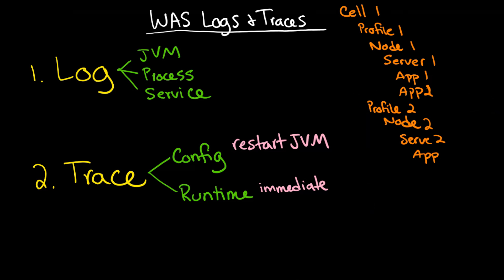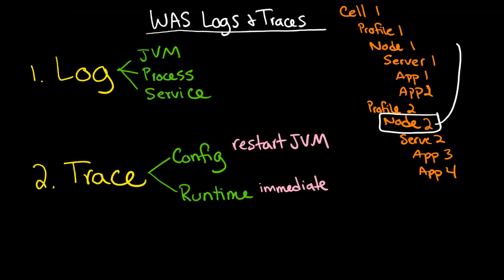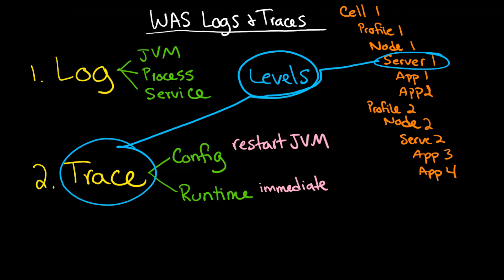You might have multiple profiles in the system — so node 2, server 2, and additional apps. Keep in mind that every profile can only have a single node; you can't have two or more nodes per profile. When you set up your trace levels, the level needs to be applied to a given server. You identify the server you want, and then com.ibm.cf targets that particular application — counter fraud — on that server.